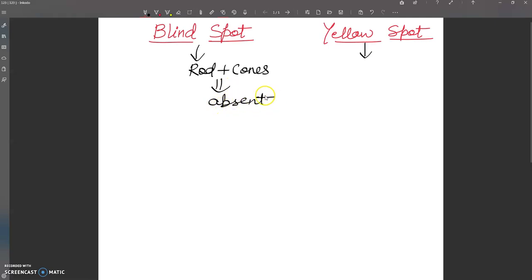And if we talk about the other points, in yellow spot, high concentration of cones. Cones are high concentration of cones. Rod and cones are already told in our last video. They both are photoreceptor cells. And here the rods are absent. This point you will memorize.